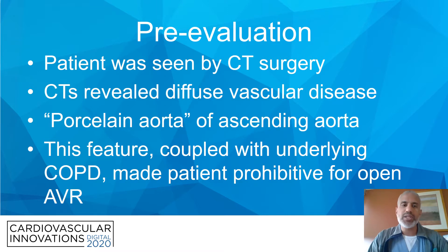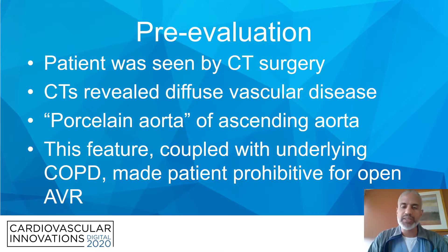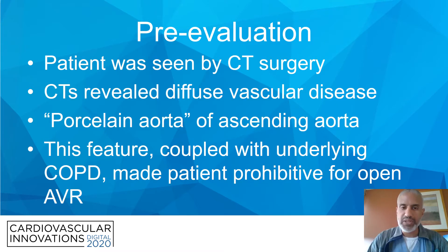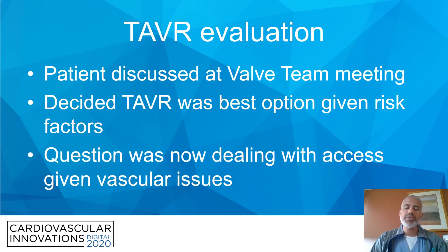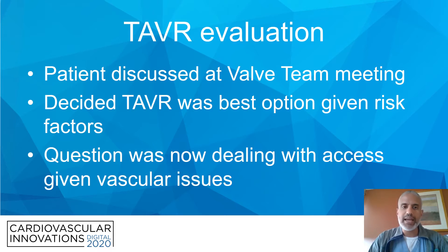Her pre-evaluation: the patient was seen by CT surgery. Her CAT scans revealed diffuse vascular disease and a porcelain aorta of the ascending aorta. This feature, coupled with her underlying COPD, made the patient prohibitive for open AVR. We then proceeded with a TAVR evaluation. The patient was discussed at the TAVR valve team meeting, and it was decided that TAVR was the best option given the risk factors involved.